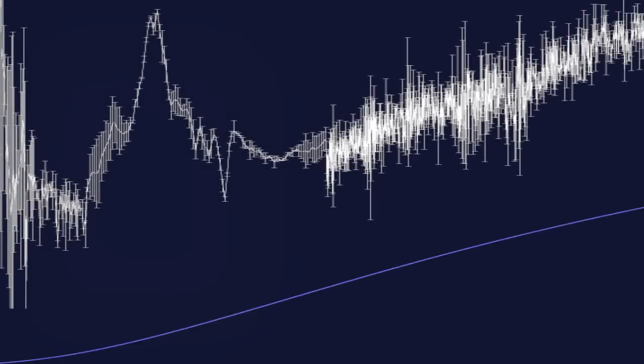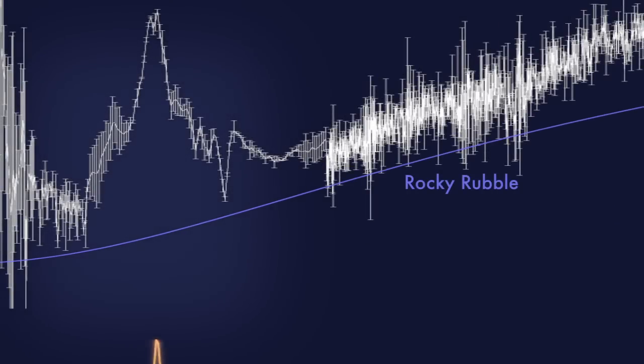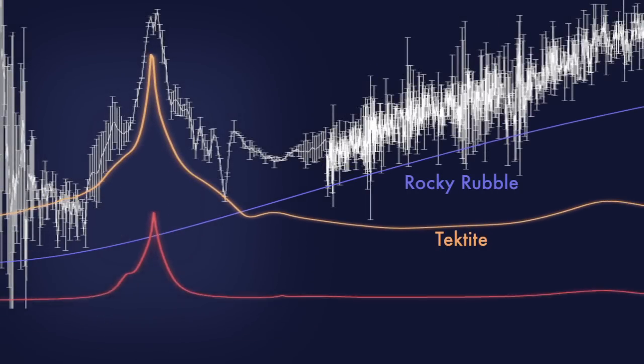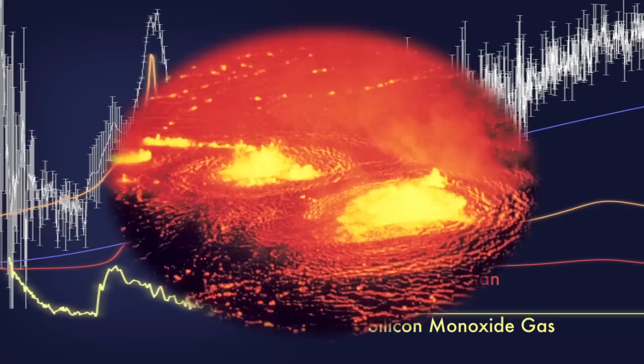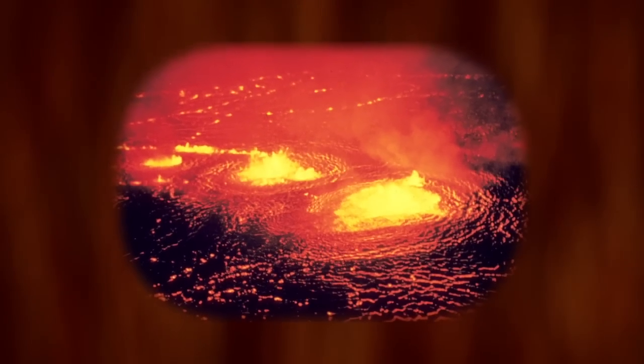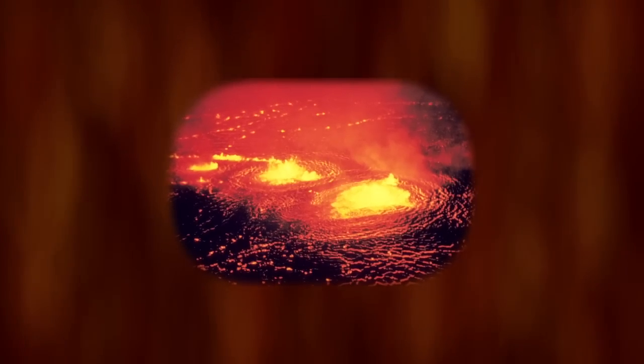Aside from the usual indicators of rocky rubble, they found features corresponding to tektite, obsidian, and silicon monoxide gas. What's strange is that tektite and obsidian are formed from molten materials.